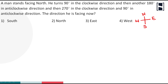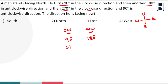I'm going to show a shortcut method. Note down: clockwise direction — 90 degrees. Next, anti-clockwise direction — 180 degrees. Next, clockwise direction — 270 degrees. Next, anti-clockwise direction — 90 degrees.